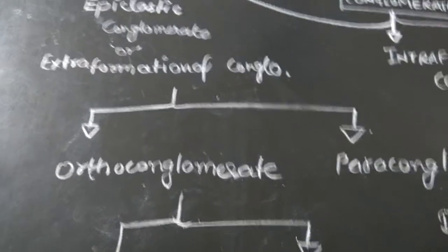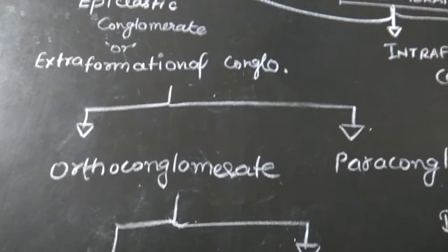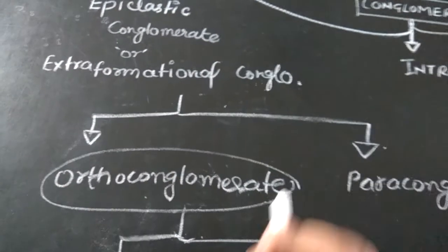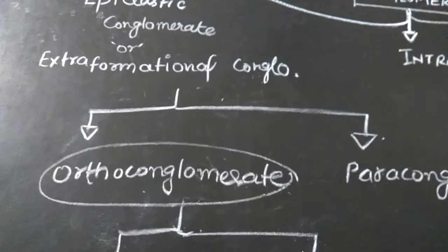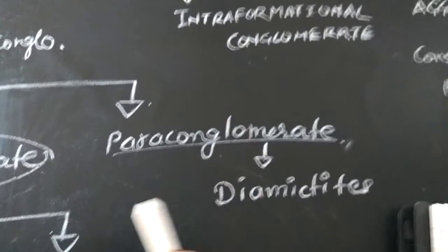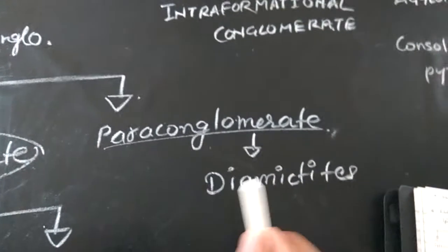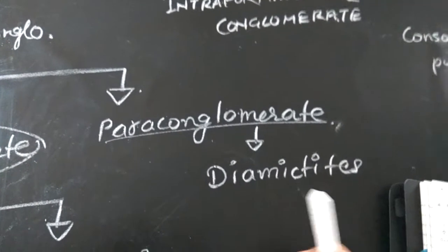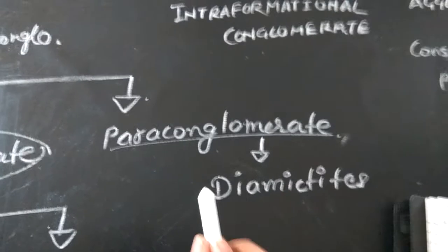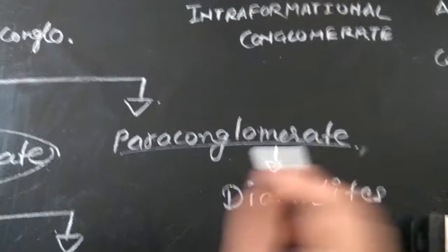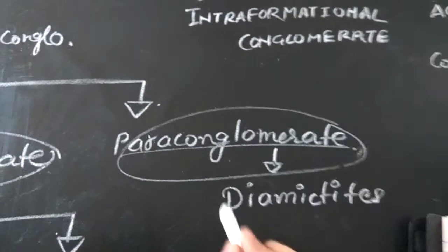Orthoconglomerate with well-rounded pebbles is used to demarcate a stable tectonic setting. On the other hand, paraconglomerate consists of a matrix of roughly 15 percent or greater. The grains or clasts are ill-sorted or unsorted, polymodal in size, and paraconglomerate is basically called an immature conglomerate.